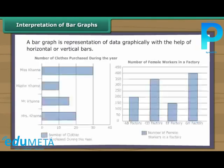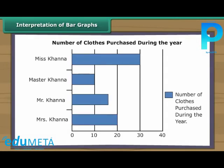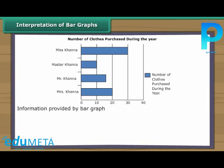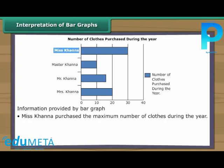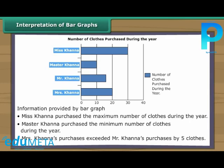Interpretation of bar graphs. A bar graph is a representation of data graphically with the help of horizontal or vertical bars. Bar graphs are easier to draw than pictographs. Look at this horizontal bar graph. The thickness of the bars and the gap between the bars are identical. It shows details of clothes purchased by members of the Khanna family during the year. One unit of length represents 10 clothes purchased. Mrs. Khanna purchased the maximum number of clothes, and Master Khanna purchased the minimum. Mrs. Khanna's purchases exceeded Mr. Khanna's by 5 clothes.